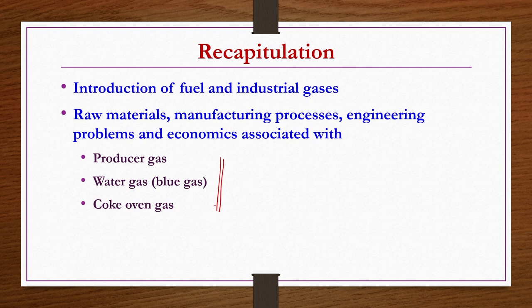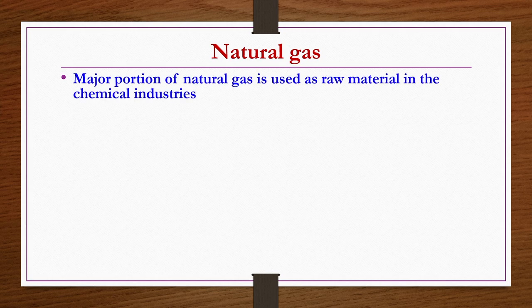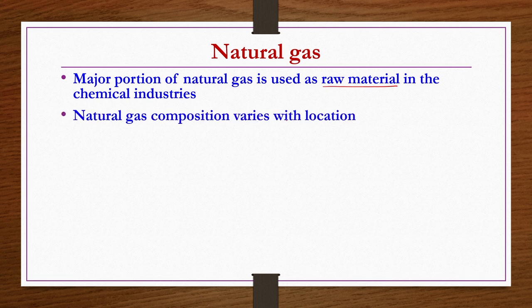Now in this lecture, we will be starting with production of natural gas. A major portion of natural gas is used as raw material in chemical industries. Natural gas composition varies with location. It consists primarily of methane, but some fractions of ethane, propane, butane, etc. would also be there, in addition to moisture and some sulphides. The gas may be wet because of this moisture.